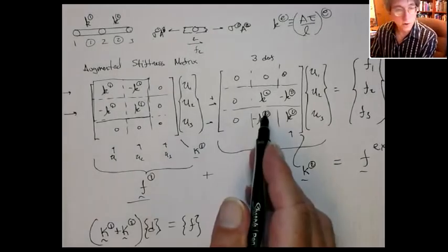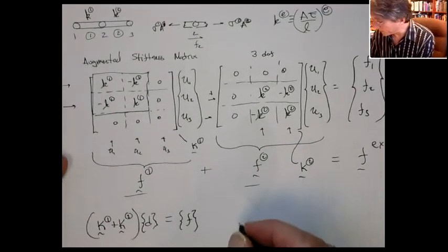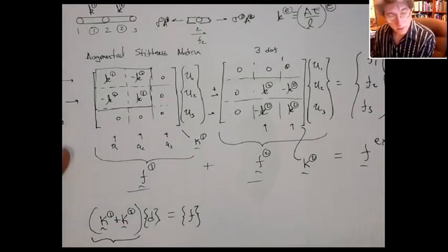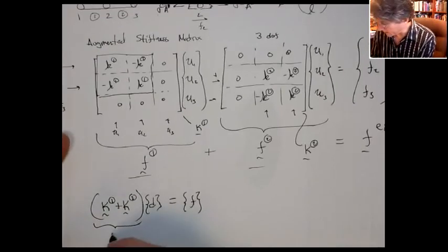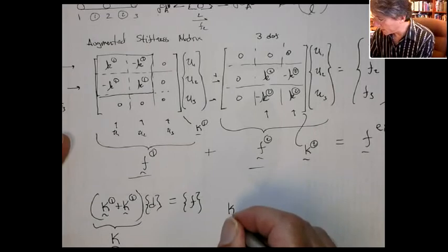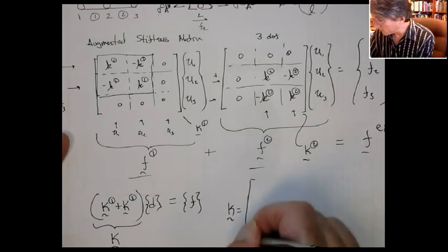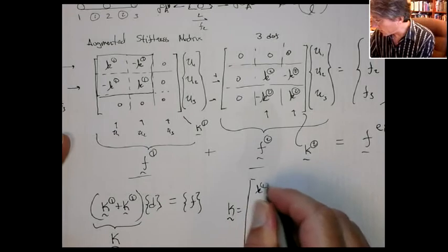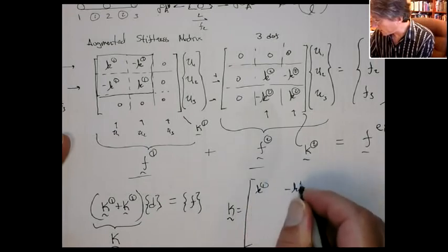Then if you just sum these two augmented stiffness matrices up, what you get is the global stiffness matrix, big k, and here you can see, obviously, that big k has to equal, just by adding these two together,